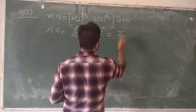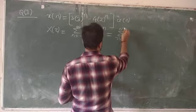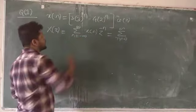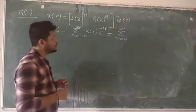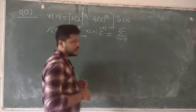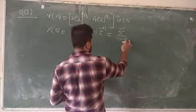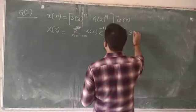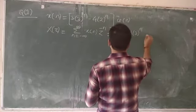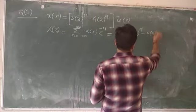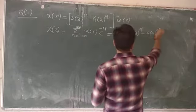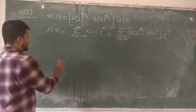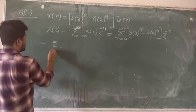Substituting the value of xn = (3·3^n − 4·2^n)·u(n), since u(n) is present the summation limit changes from 0 to infinity instead of −∞. So we have summation from n = 0 to ∞ of (3·3^n − 4·2^n)·z^(−n).